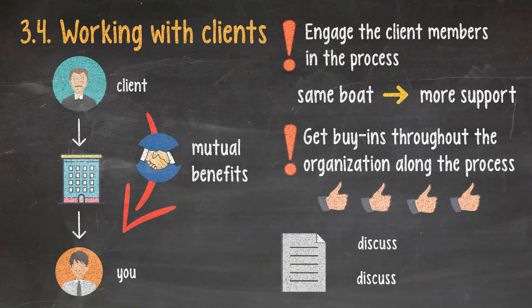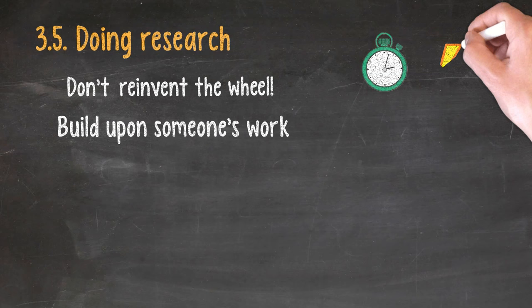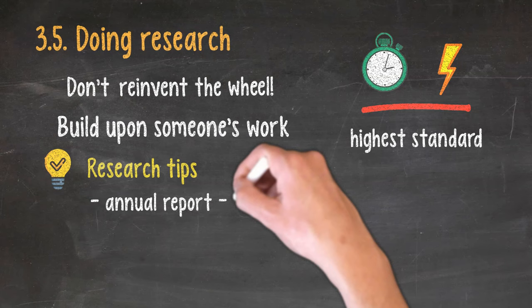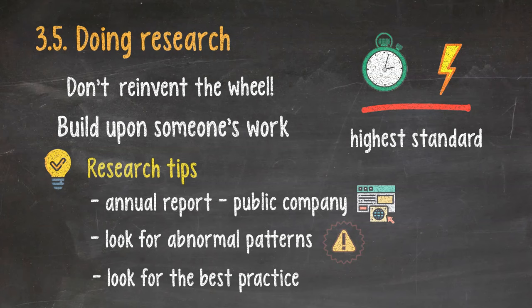3.5. Doing research. Don't reinvent the wheel. Whatever you're doing, chances are that someone, somewhere, has done something similar already. Building upon someone's work is the best way to save time and energy while achieving the highest standard. Besides, here are some research tips. Start with the annual report. All public companies have them available on their website. Look for abnormal patterns, things that are especially good or bad. That's where all the insights lie. Last but not least, look for the best practice. Find out what the best performers in the field are doing and learn from them.